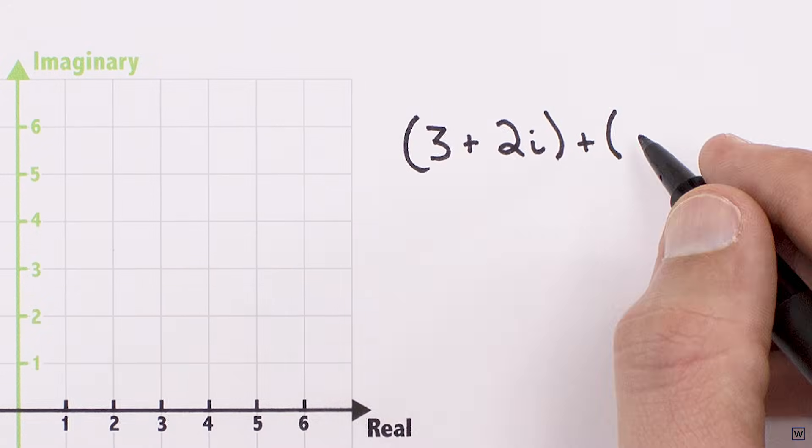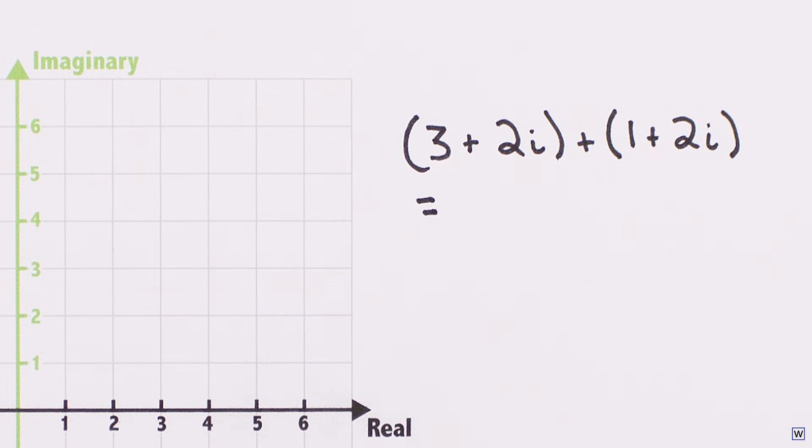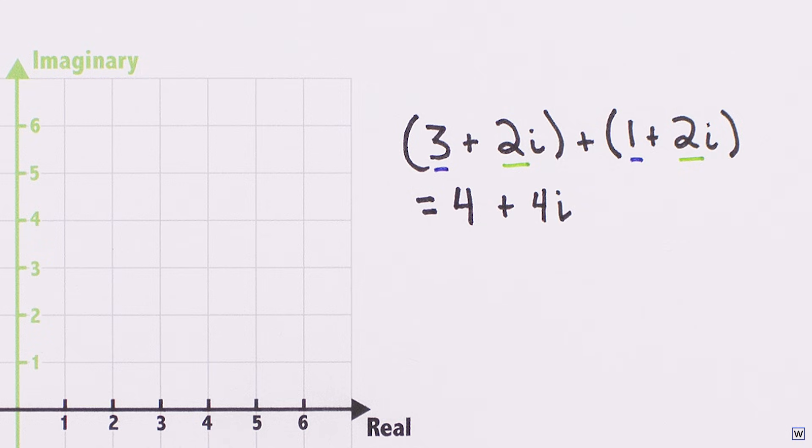The first rule is how complex numbers add and subtract. The real and imaginary parts add independently, making complex numbers and the complex plane useful for problems involving motion in two dimensions.